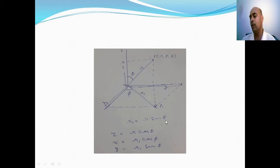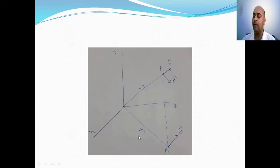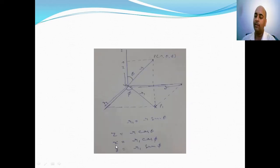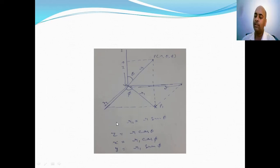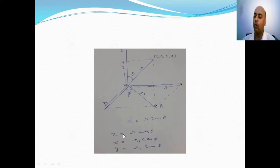From this we can calculate that X is R sin theta cos phi and Y is R sin theta sin phi. This is how we convert a point given in spherical coordinates (R, theta, phi) into corresponding Cartesian coordinates (X, Y, Z).